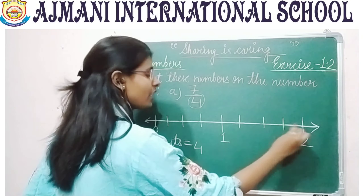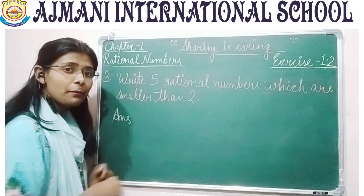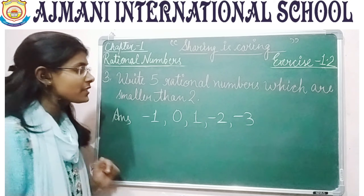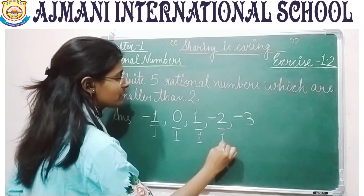Try to do question 2 by your own as it also involves depicting numbers on the number line. Question number 3: write 5 rational numbers which are smaller than 2. Since 2 is a positive integer and all integers are rational numbers, you could take minus 1, 0, 1, minus 2, minus 3, and so on, because all integers have 1 in their denominator and are hence rational numbers.